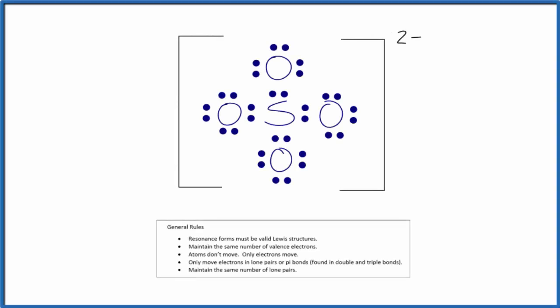To write the resonant structures for SO4²⁻, the sulfate ion, we'll follow these rules here. So the first thing is we need a valid Lewis structure.